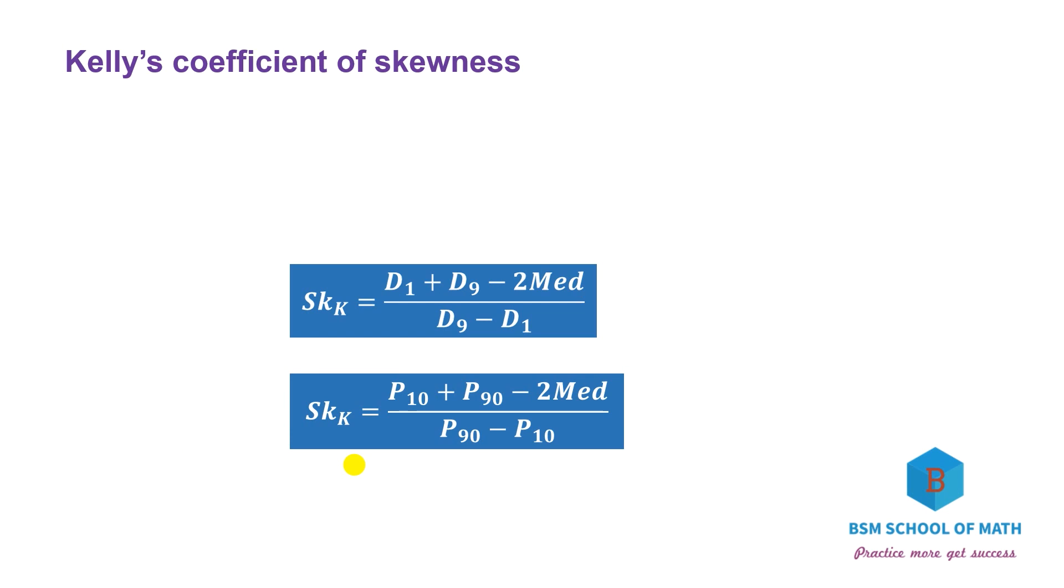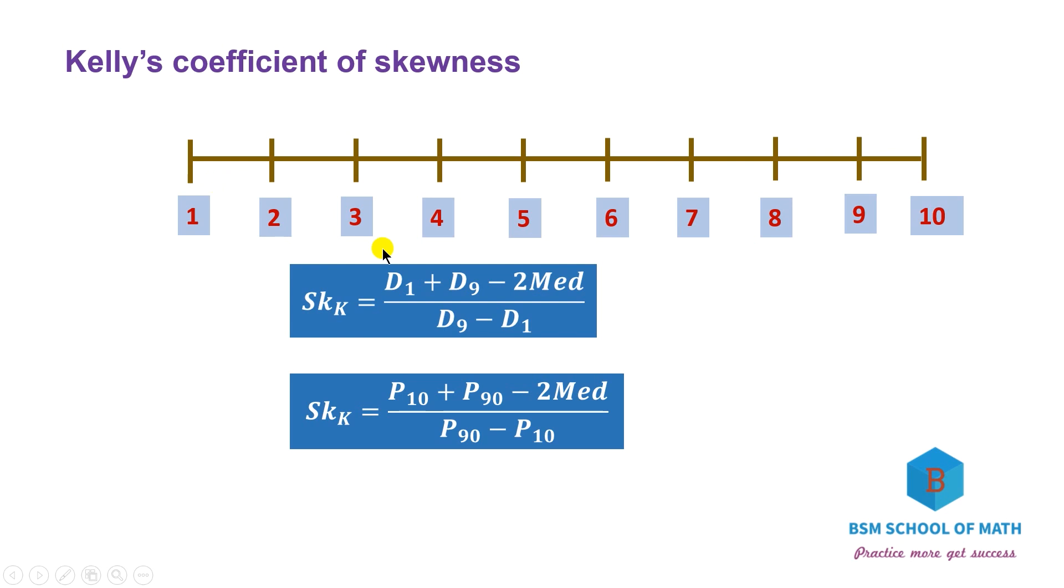It is based on skewness data differed by Kelly's coefficient of skewness based on deciles and percentiles. Deciles divide the data into 10 parts, so the formula is D1 plus D9 minus 2 times median, divided by D9 minus D1.